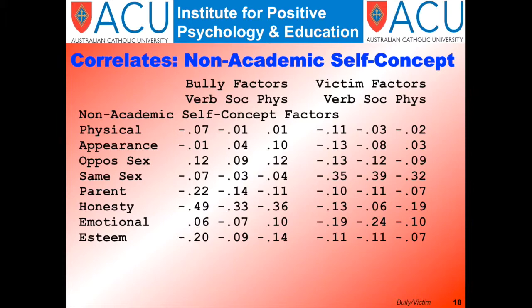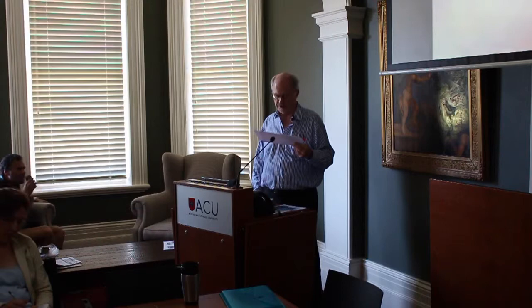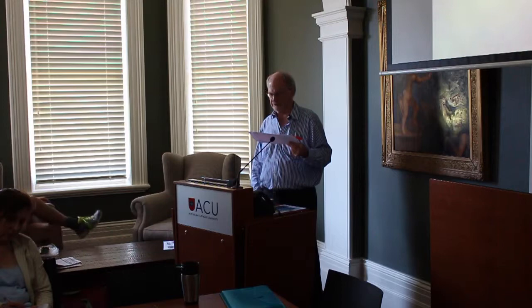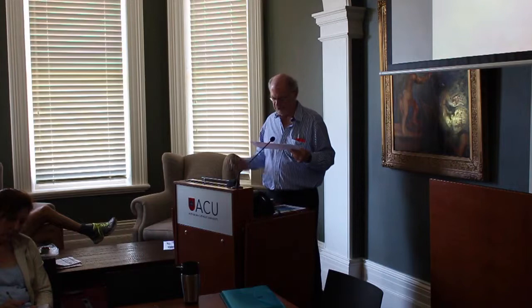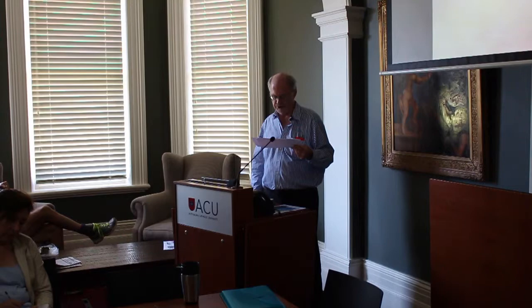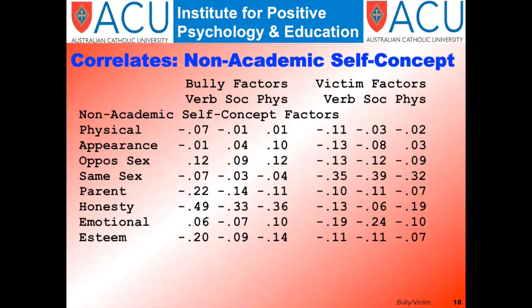Bully factors are positively correlated with opposite-sex relations self-concepts — bullies perceive themselves as popular with the opposite sex. For bullies, the most negative differences are for the honesty/trustworthiness scale and parent scale, suggesting that bullies know what they're doing isn't right. For victims, the most negative areas of self-concept are same-sex relationships, probably reflecting that bullying is typically done by same-sex peers. Victims fare worse than bullies in terms of emotional stability self-concept, consistent with the findings on depression.